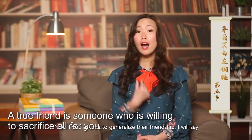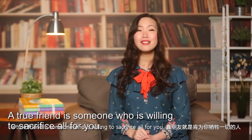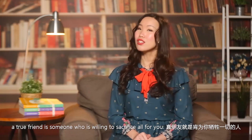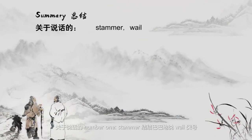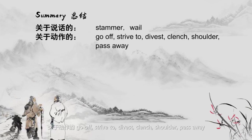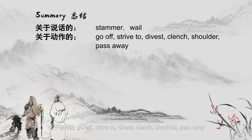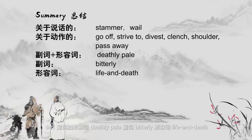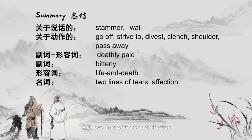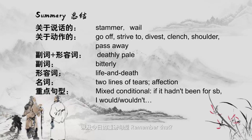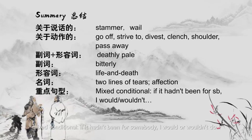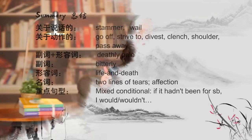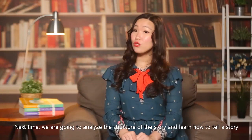If you ask me to generalize their friendship, I will say: a true friend is someone who is willing to sacrifice all for you. Let's review today's key descriptive vocabulary. For speaking: stammer, wail. For actions: go off, strive to, divest, clench, shoulder, pass away. Adverbs and adjectives: deathly pale, bitterly, life and death. Nouns: two lines of tears, affection. And today's star structure: the mixed conditional — 'If it hadn't been for somebody, I would/wouldn't do something.' Next time, we're going to analyze the structure of the story and learn how to tell a story like this on our own. Today's homework: how can we retell the story with six sentences? See you next time!